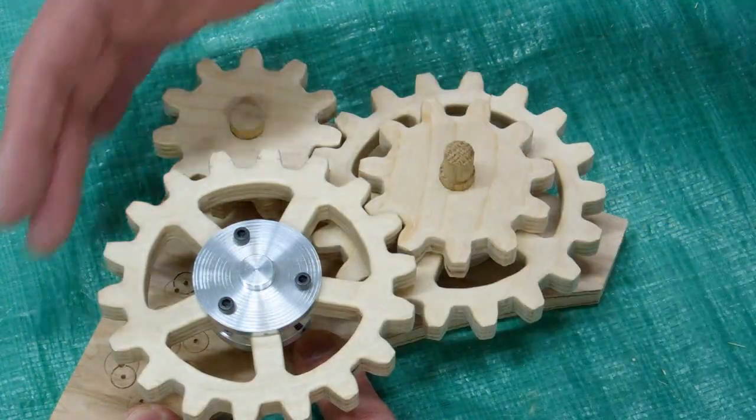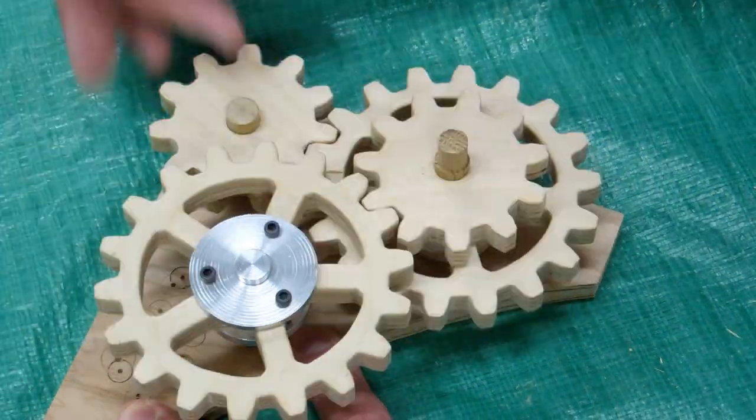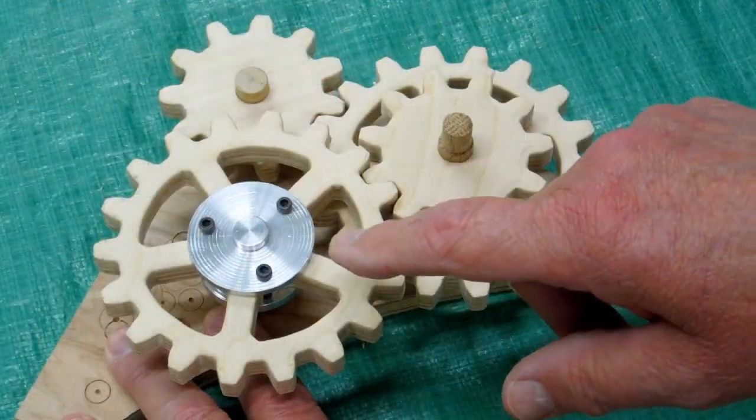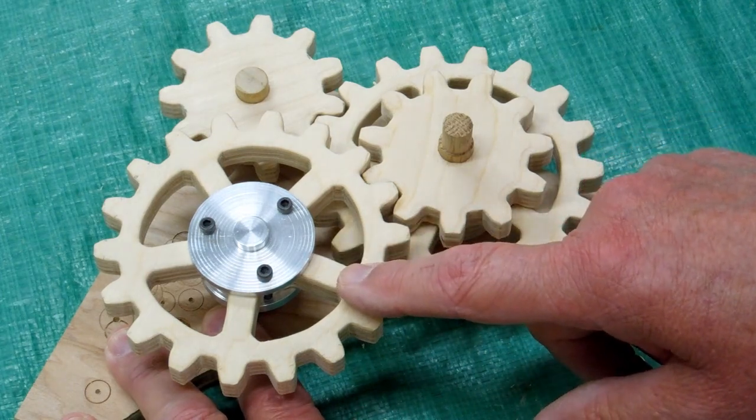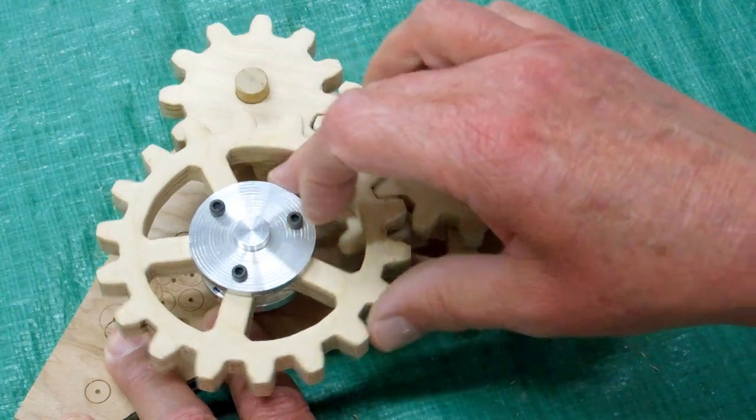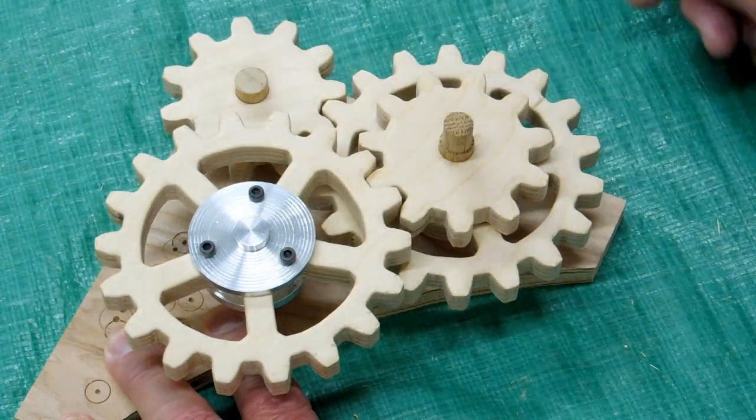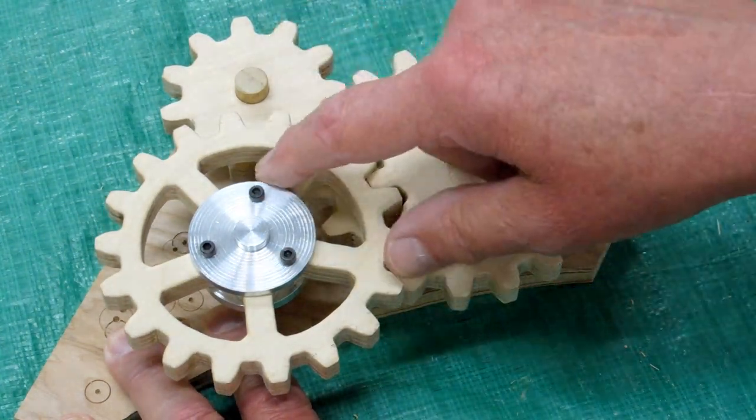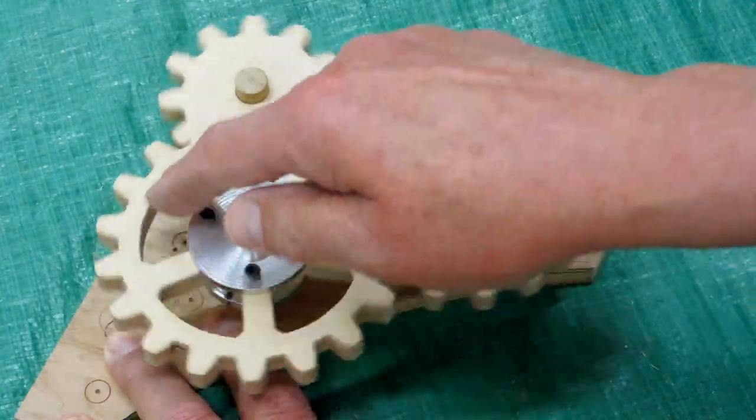Now I can see that this turns quite freely. The electric motor will turn this at 19 RPM, which is about that fast. And the output gear, the one on the crankshaft, will be turning about 60 RPM.